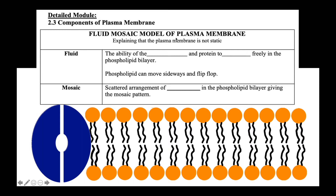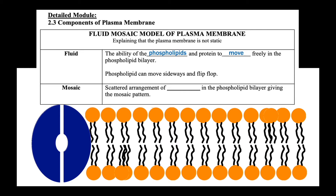The fluid mosaic model of the plasma membrane explains that the plasma membrane is not static. This is very obvious when you watch a video of an amoeba trying to catch its prey. Fluid refers to the ability of the phospholipids and proteins found in the membrane to move freely in the phospholipid bilayer. Phospholipid molecules can move sideways or laterally.